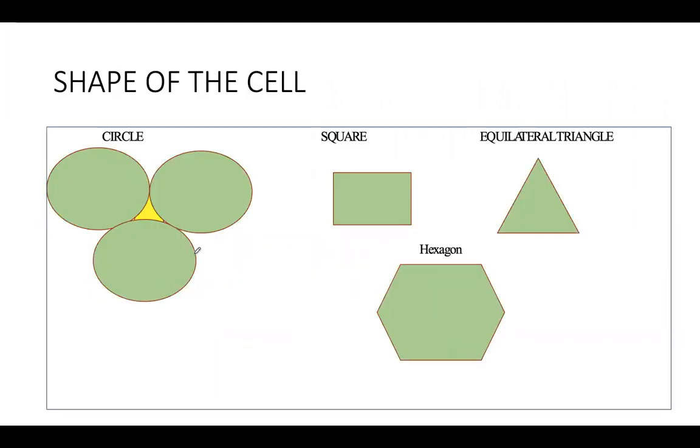If we consider that the shape of the cell is a circle, we can see that certain regions are not covered. There are gaps left behind the cells which are not covered by the base station. Hence we cannot select a circle as our shape.